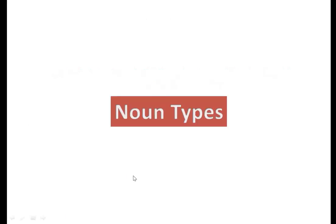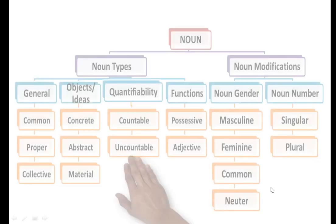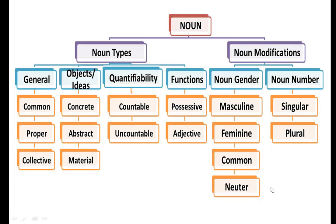Now we are going on to see what are the different noun types. Take a look at the classification of nouns. Nouns are broadly classified into two major types, that is noun types and noun modifications.